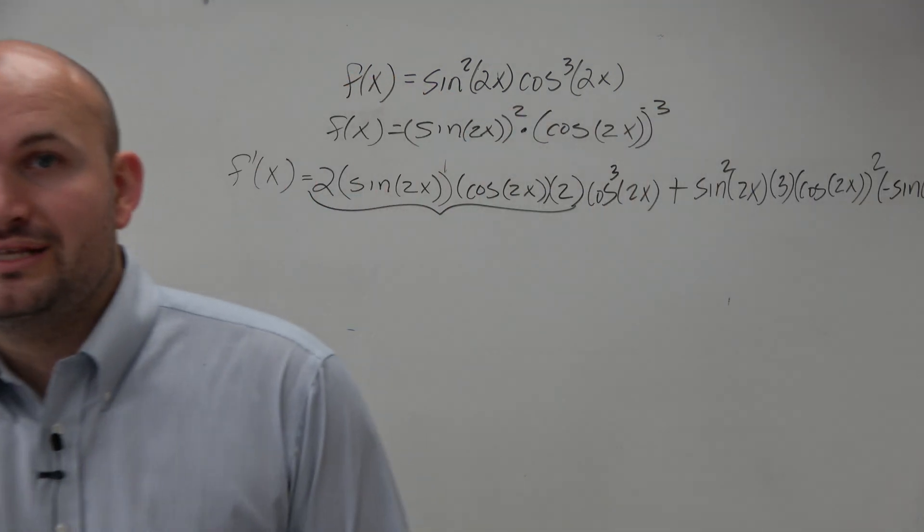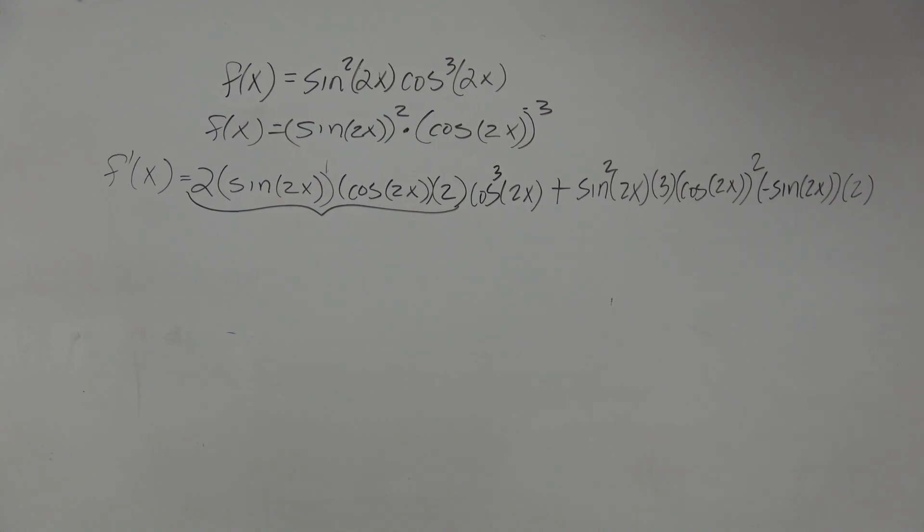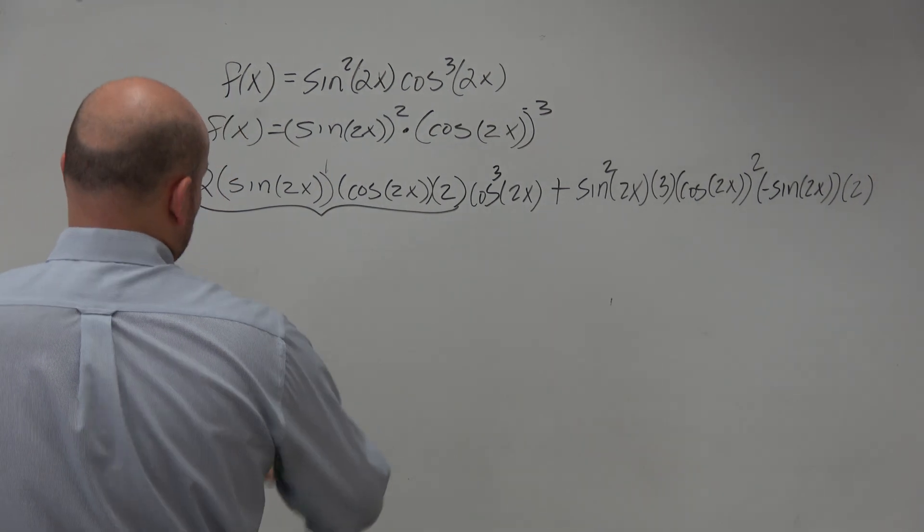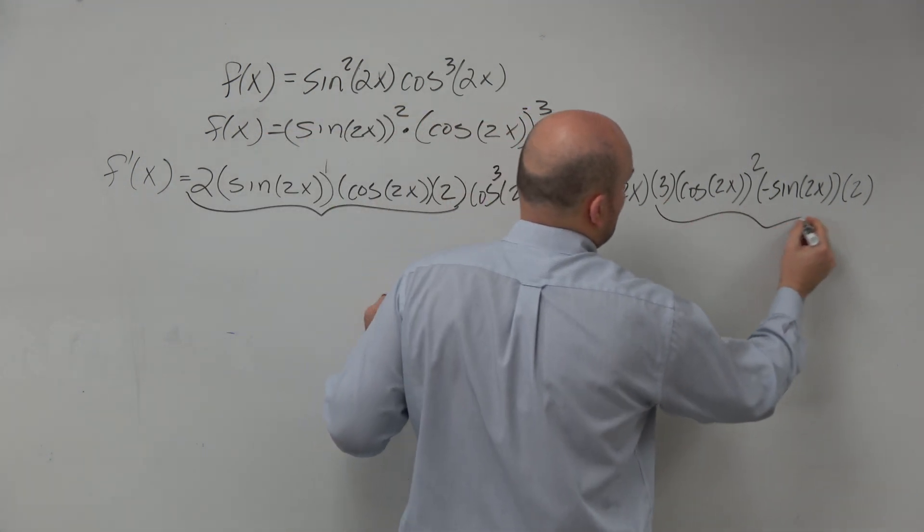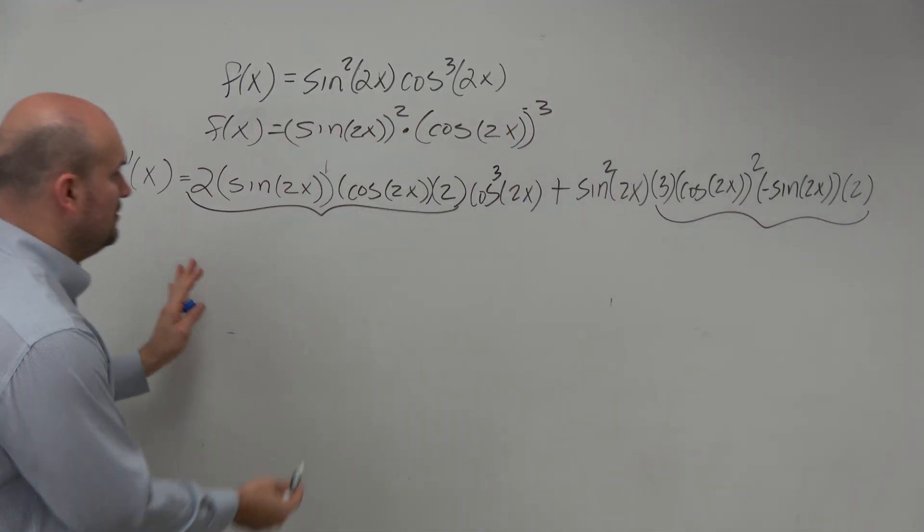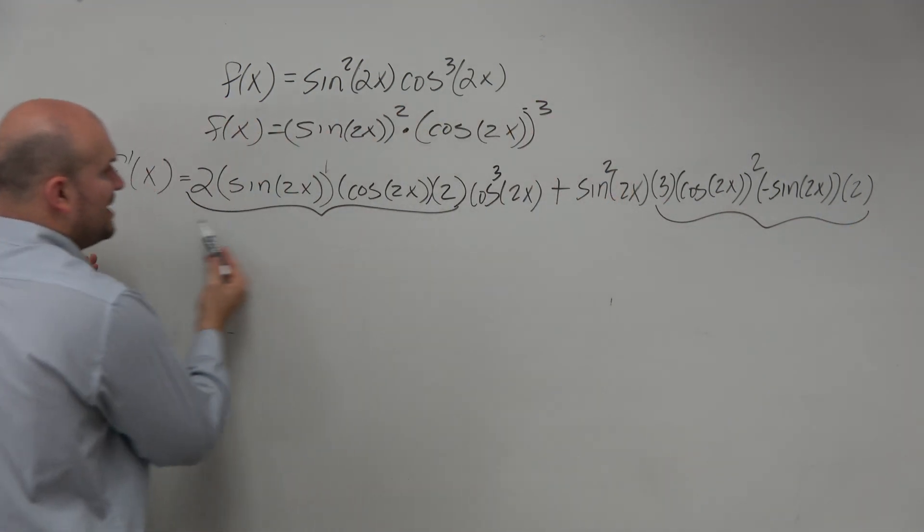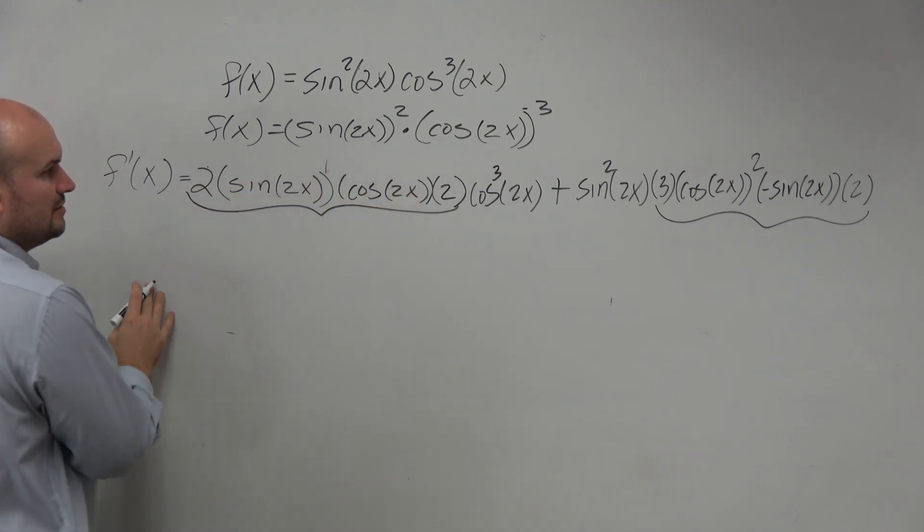Now, before you get into simplifying or doing anything like that, what we want to make sure we do is simplify each one of these expressions. So let's see what we can multiply and combine over here. Well, I have a 2 and a 2.